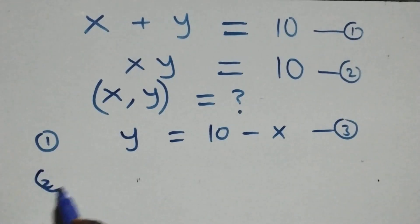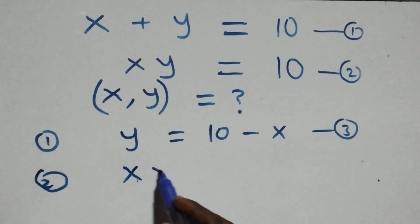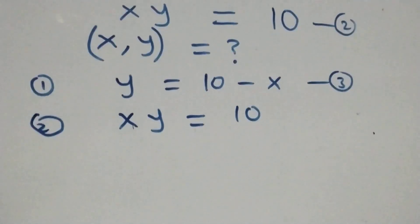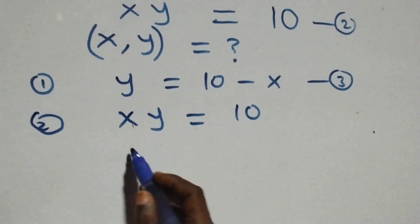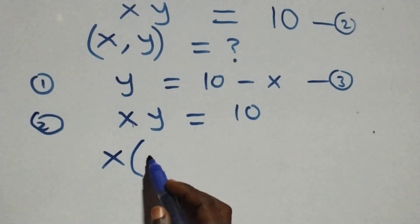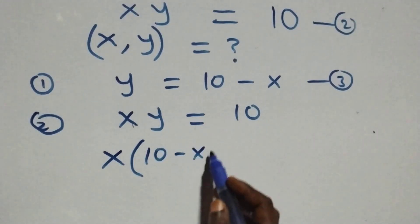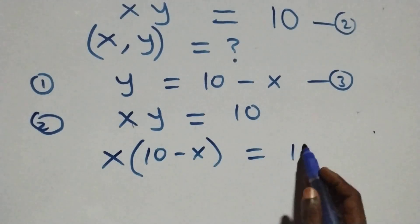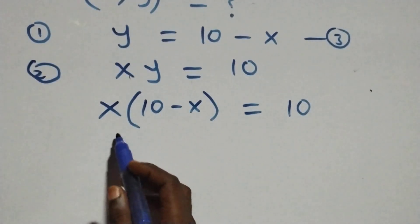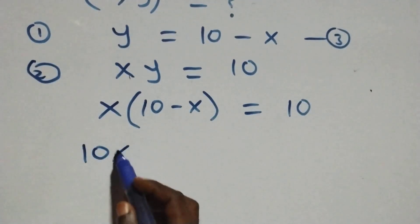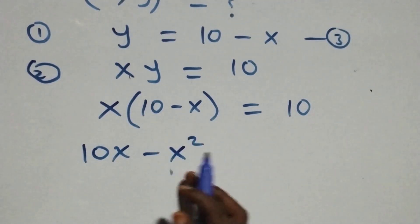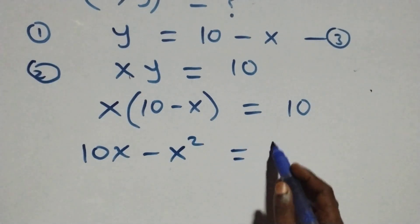From equation two, which is x times y equals ten, we substitute the value of y from equation three. So x times bracket ten minus x equals ten. We open the bracket and this becomes ten x minus x squared equals ten.